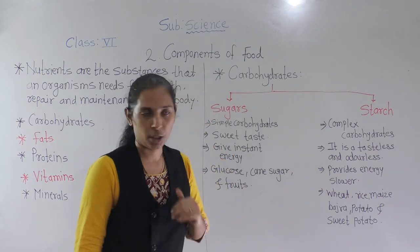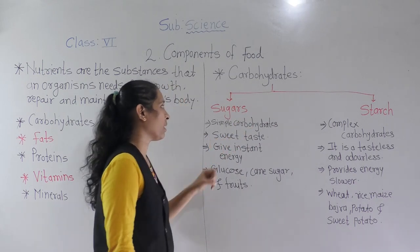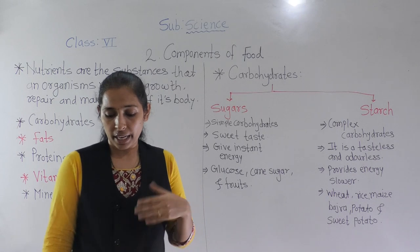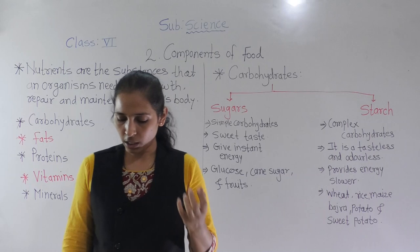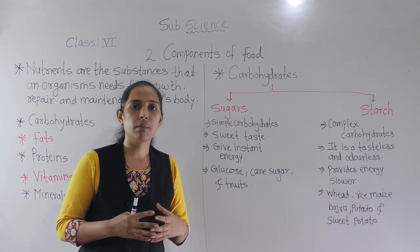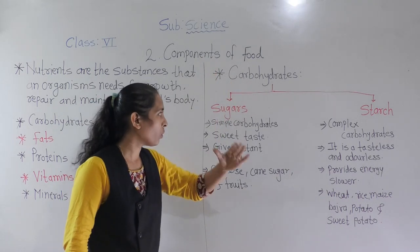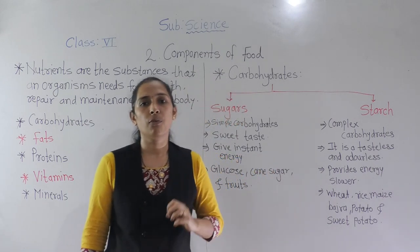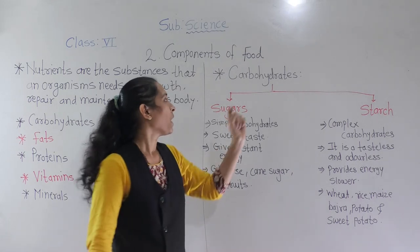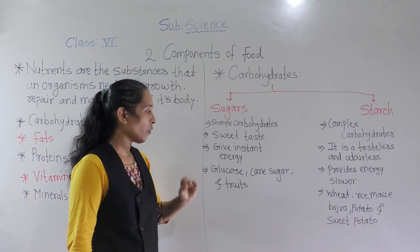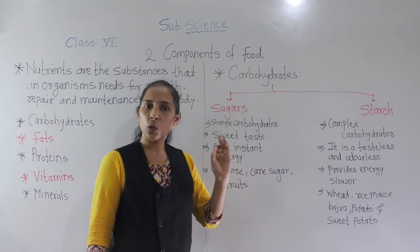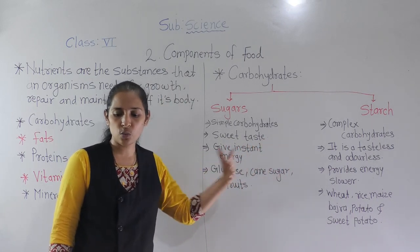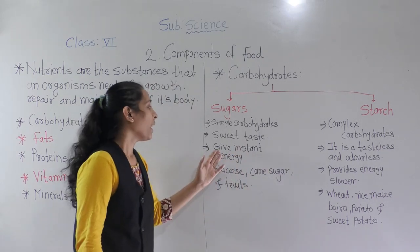Carbohydrate has two types: sugars and starch. Starting with sugars — sugar is the simple carbohydrate form. It is found in the form of fructose and glucose. So sugars are found in the form of fructose and glucose, and from that fructose and glucose we get the sugar.